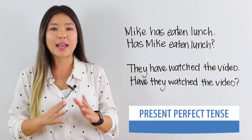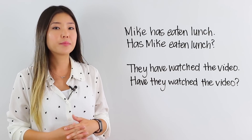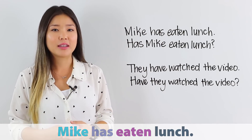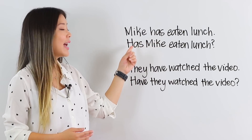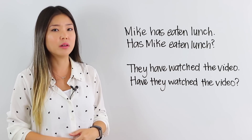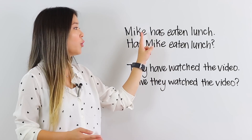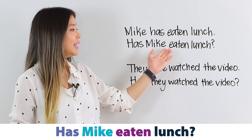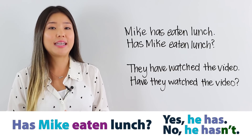Now let's take a look at the have or has question form for the present perfect tense. Take a look at the board. The first sentence says: Mike has eaten lunch — that is a statement. To turn it into a question, all you have to do is put has at the beginning, then follow with the subject and then the past participle. The placement of the past participle doesn't change; we've simply changed the order of the first two words. Has Mike eaten lunch? You can answer by saying: Yes, he has. Or: No, he hasn't.